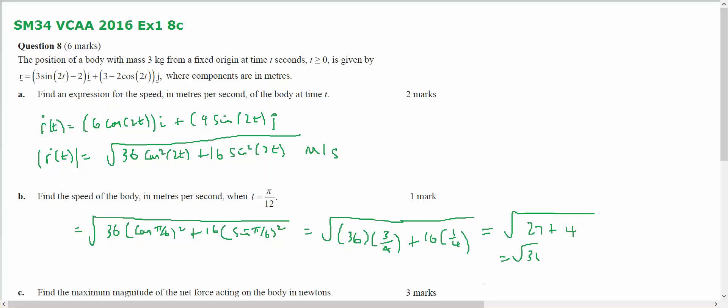This is for Year 12 Specialists. It comes out of the VCAA 2016 Exam 1 Question Number 8. Position of a body with mass 3 from a fixed origin at time when t is positive is given by that particular rule and that's r.